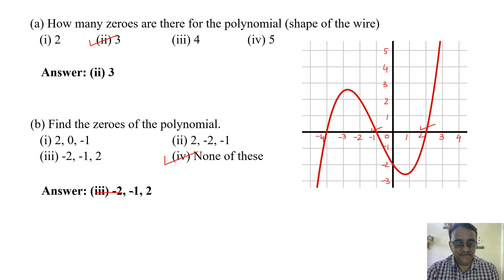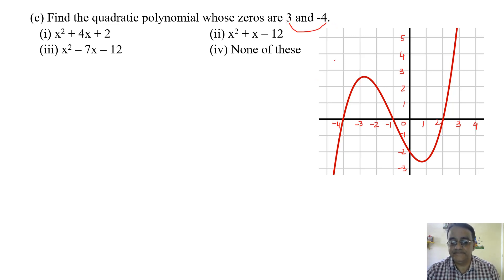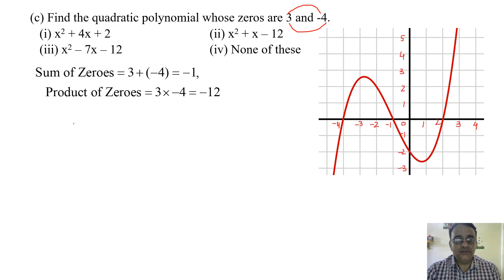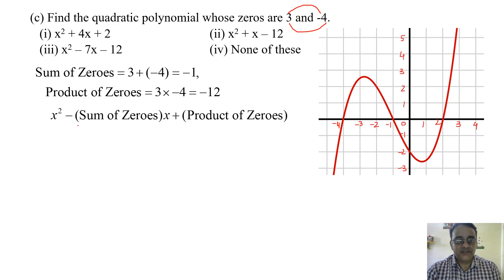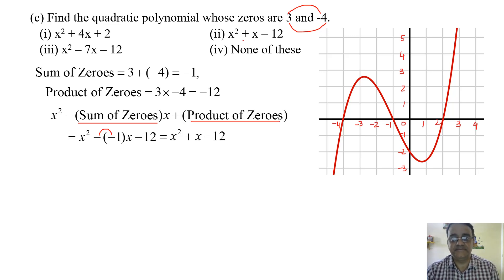Find the quadratic polynomial whose zeros are 3 and minus 4. Sum of zeros: 3 plus minus 4 equals minus 1. Product of zeros: 3 into minus 4 equals minus 12. Using the formula x squared minus sum of zeros into x plus product of zeros, substituting sum minus 1 and product minus 12 gives x squared plus x minus 12. The correct option is the second option.